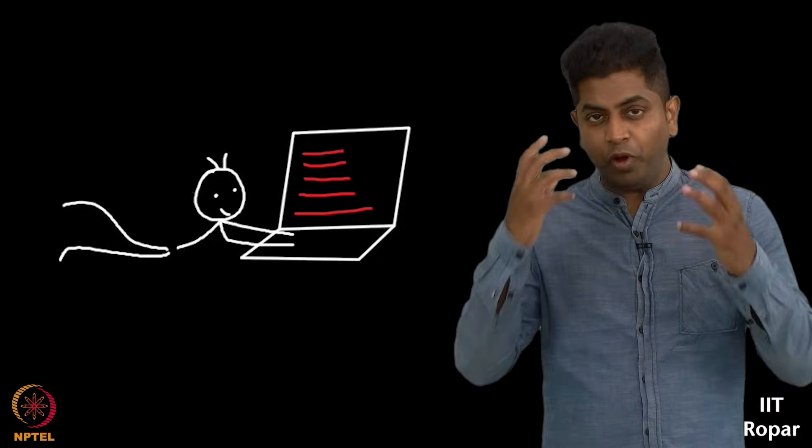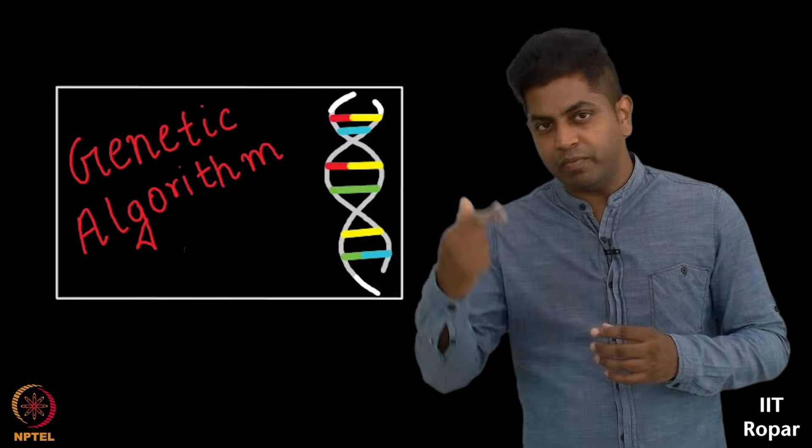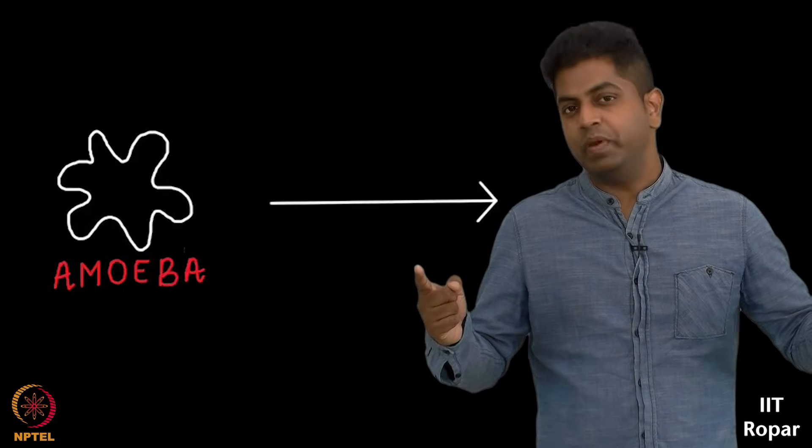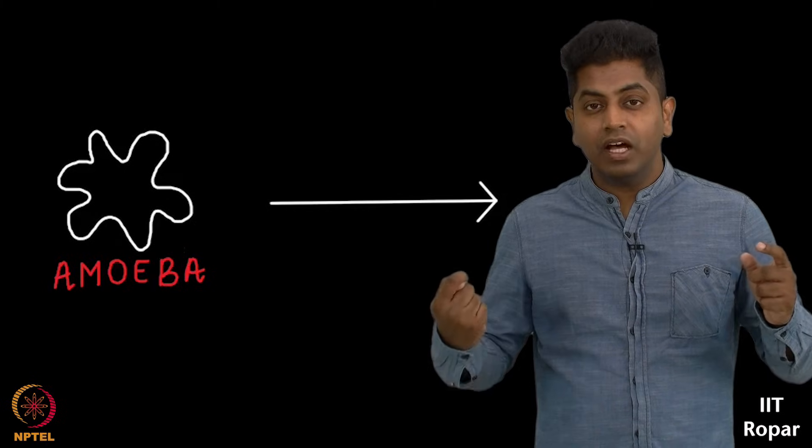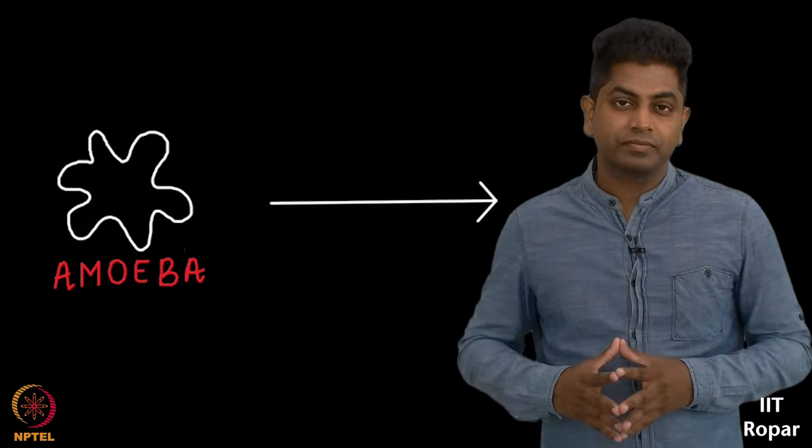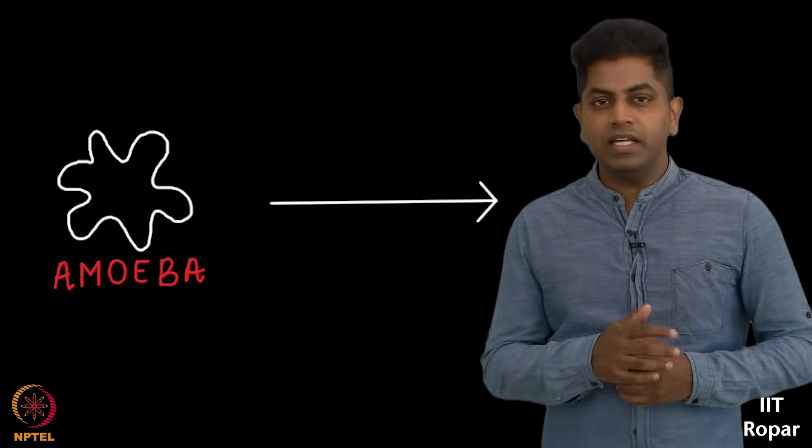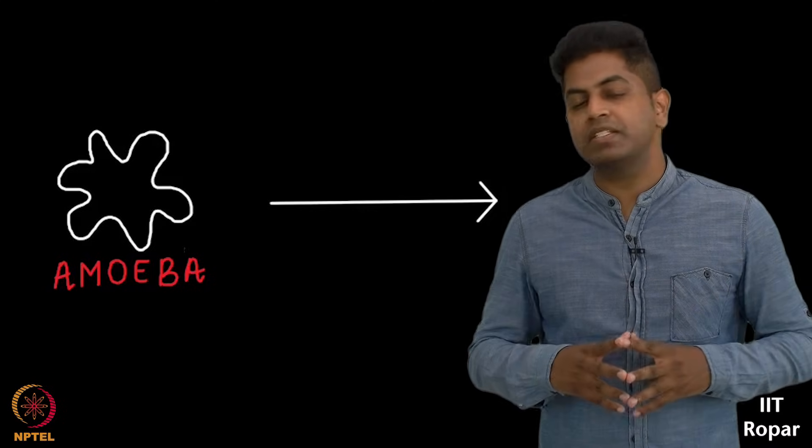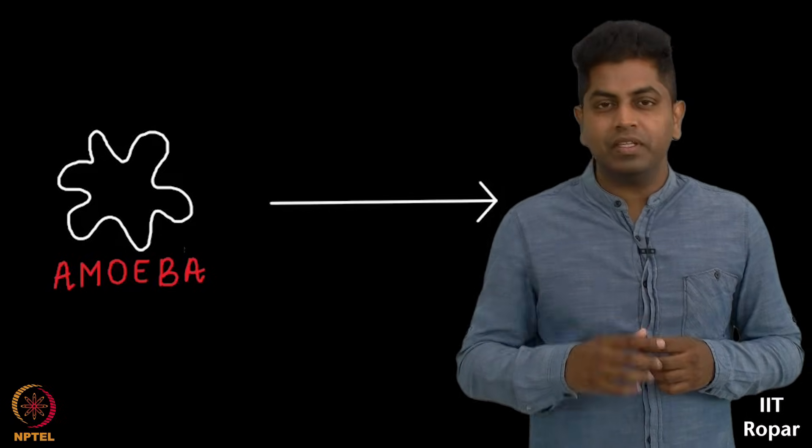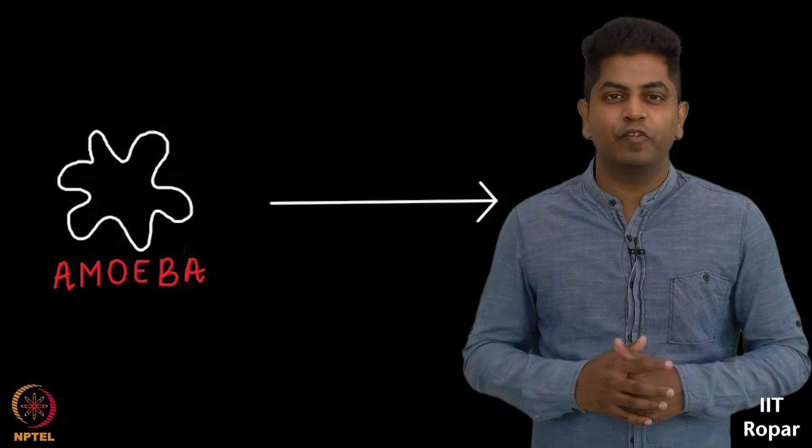In fact there is a very popular topic called genetic algorithms which does precisely this. It learns from evolution on how amoeba became human being and that very process one can mimic and use that as a sort of a technology to come out with brand new ways of accomplishing something. So what we will do is genetic algorithms per se is way out of the scope of this course.